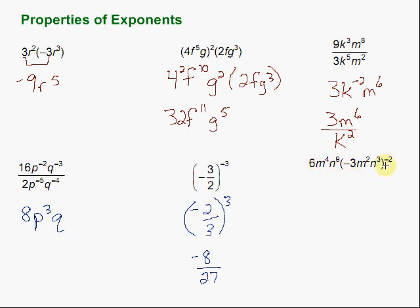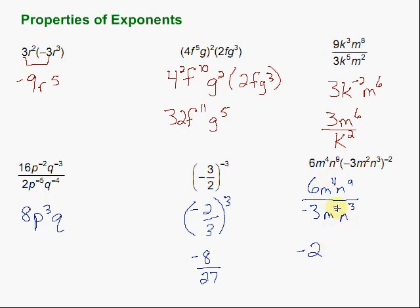Finally, we have an expression raised to the negative 2nd power. What we're going to do is flip the whole thing to the bottom to get rid of that negative power. So we have 6m to the fourth times n to the third on top — I just rewrote it — over negative 3m squared n to the third on the bottom. Now we simplify by dividing: 6 divided by negative 3 is negative 2. Then subtract the exponents: 4 minus 2 gives us m squared. And for n: 9 minus 3 gives us n to the sixth.